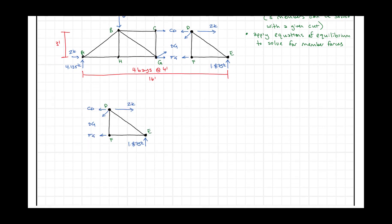The next thing I like to do is look and see if we have any forces at an angle. If we do, I like to show the component forces as well. I'll draw the vertical and horizontal components, maybe in a different color or dashed, so it's really obvious that you're using either the components or the resultant, but not both. Once we have the components in, we can apply the equations of equilibrium.